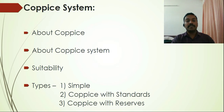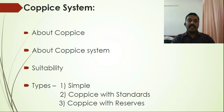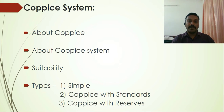The coppice system is further divided into three types based on pattern of felling. The first is the simple coppice system, which is similar to the clear felling system — all trees are felled and no trees are left out. The only difference is that regeneration is through coppice shoots rather than seeds.